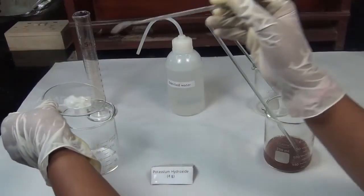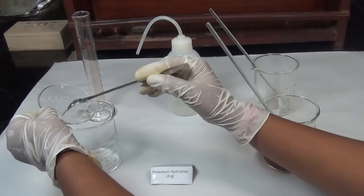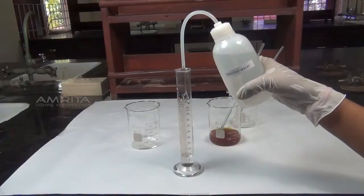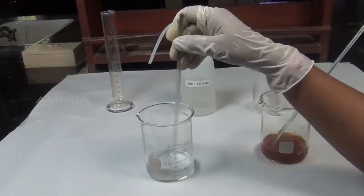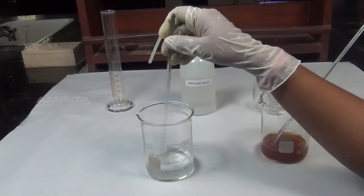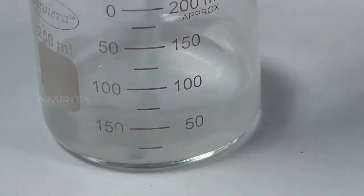In another beaker, take 4 g of potassium hydroxide. Pour another 50 ml of distilled water into this beaker. Stir the solution using a glass rod to dissolve potassium hydroxide.